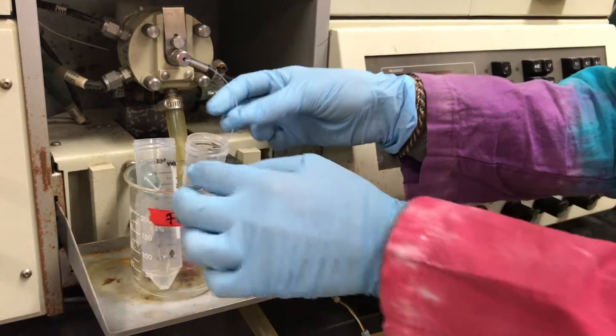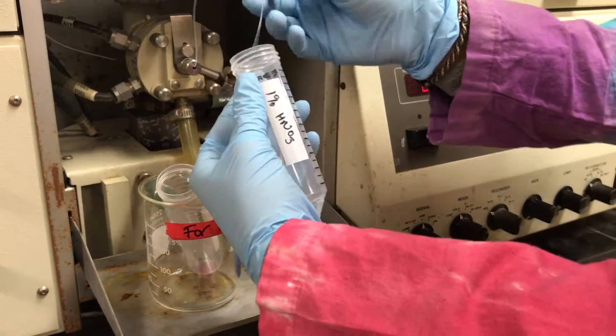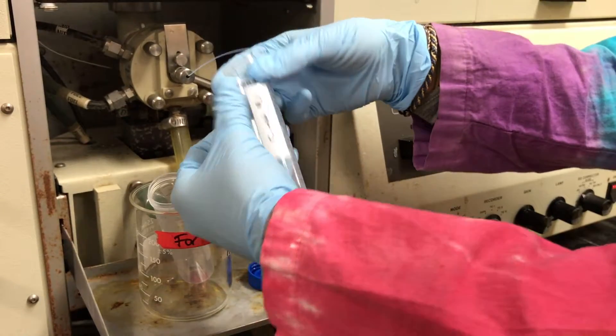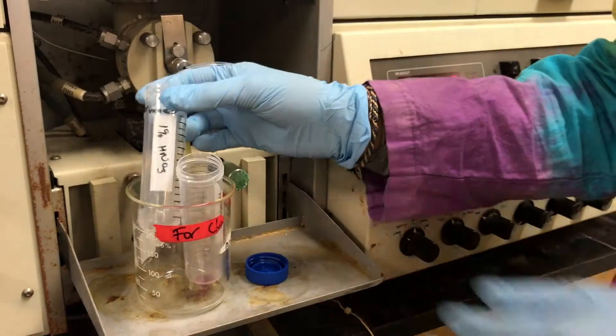To change samples, remove the tube from your first sample, and be sure to flush the system with 1% nitric acid. After that, you're ready to run your second sample.